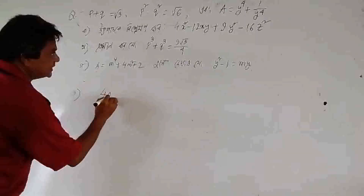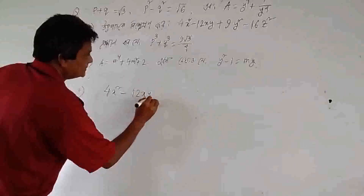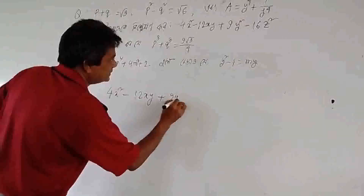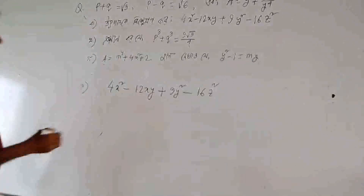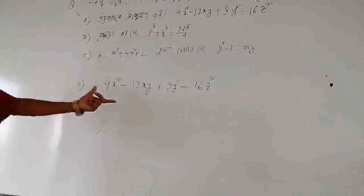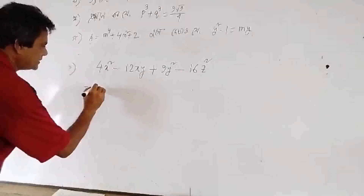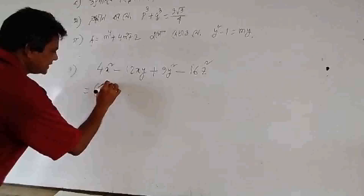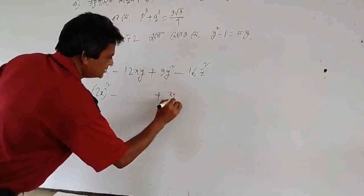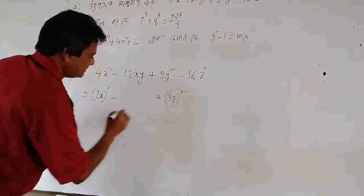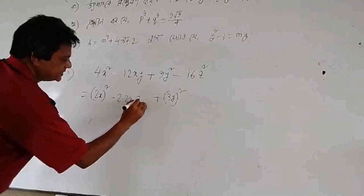Minus 1 x y, 12 x y plus 9 y squared minus 2 x y squared. The first function means: 2 x squared, minus 3 y squared, must come in 2x into 3y.